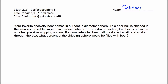Here are solutions for perfect problem five for Math 213. What's going on here is you have a sphere inside of a cube inside of a sphere. So you have this small sphere, then you have this cube, and then you have this larger sphere.